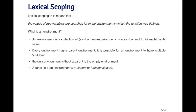The lexical scoping rules in R can be summarized as: the values of free variables are searched for in the environment in which the function was defined. An environment is a collection of symbol-value pairs — x is a symbol, and 3.14 might be its value. Every symbol has a value bound to it. Another symbol might be y, and its value is a data frame. Every environment has a parent environment — the environment that sits on top of it that it inherits from. It's possible for an environment to have multiple children. There is only one environment without a parent: the empty environment.